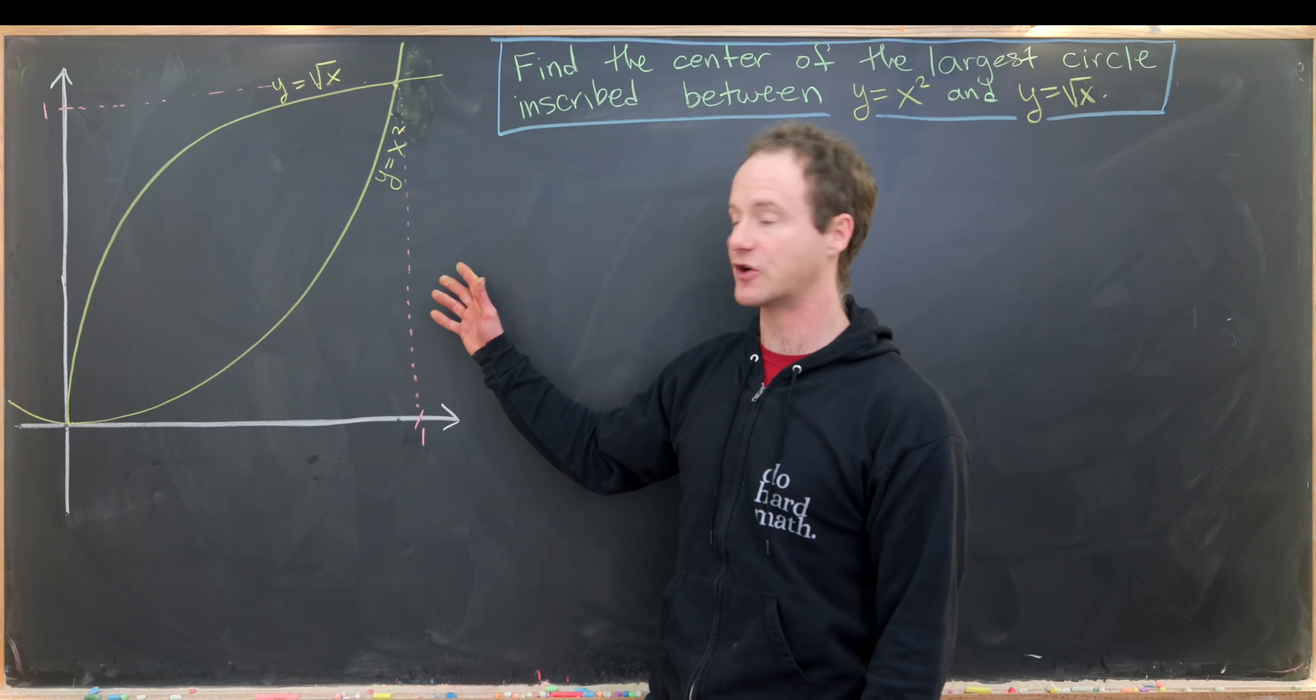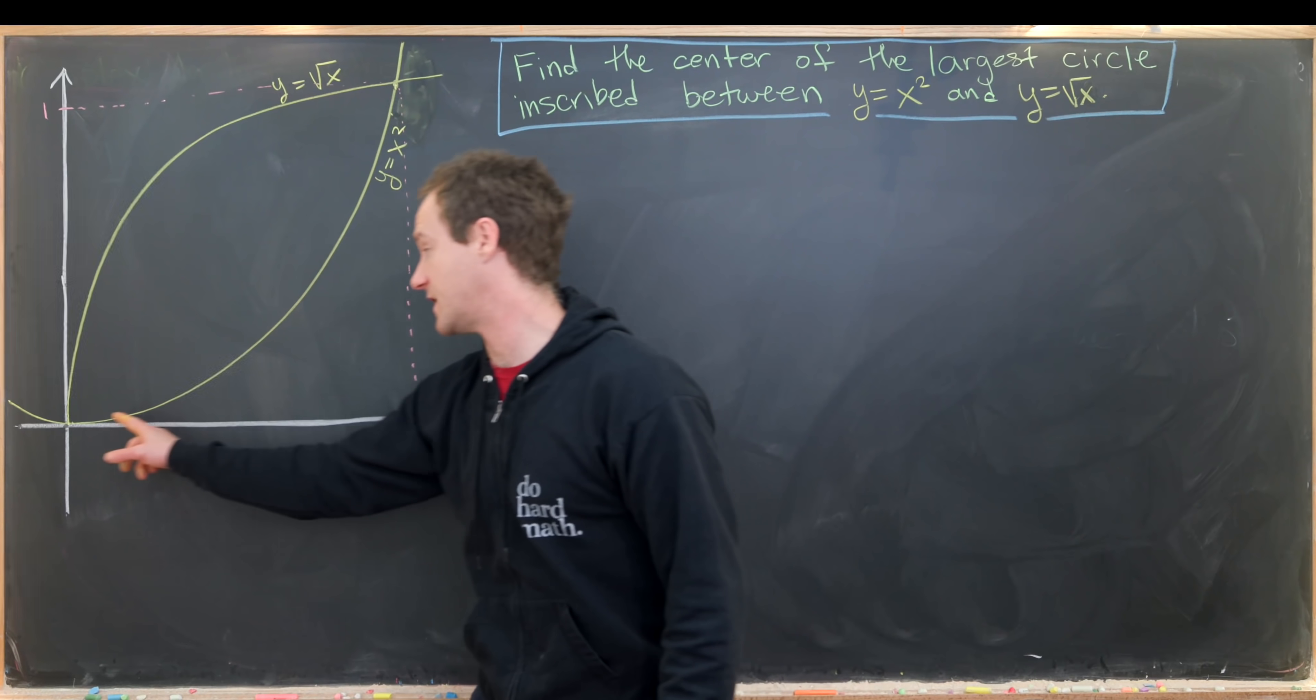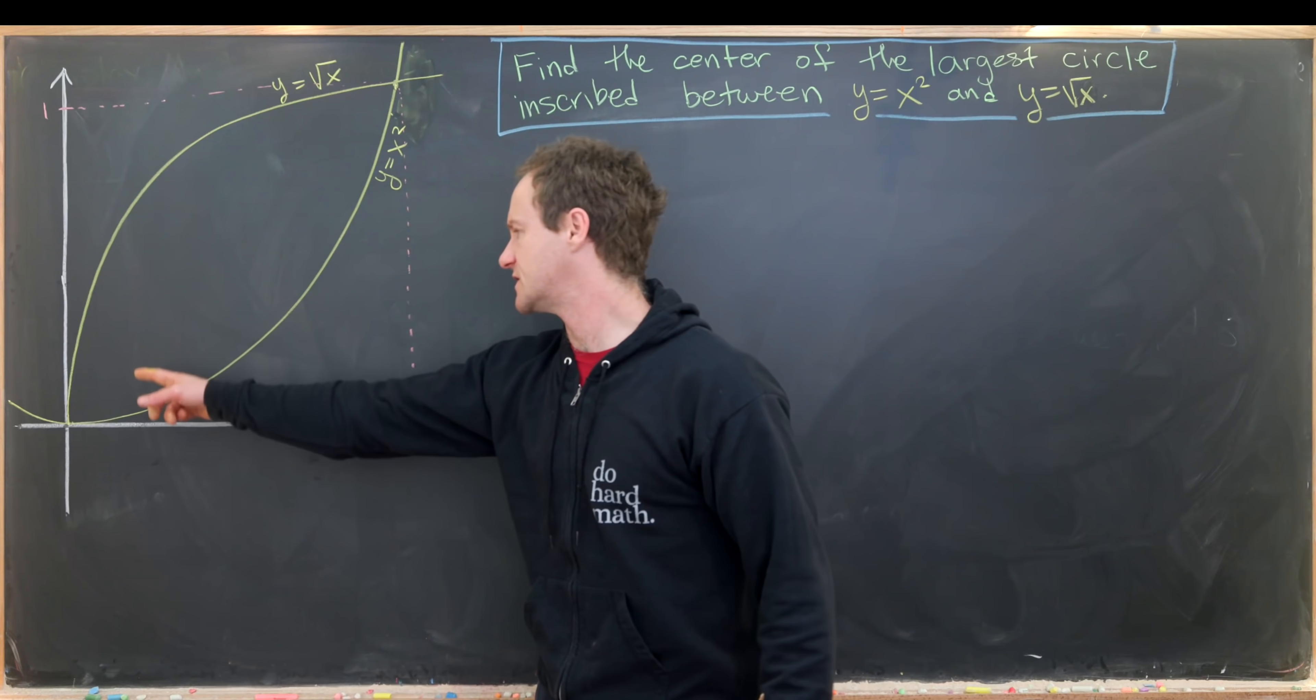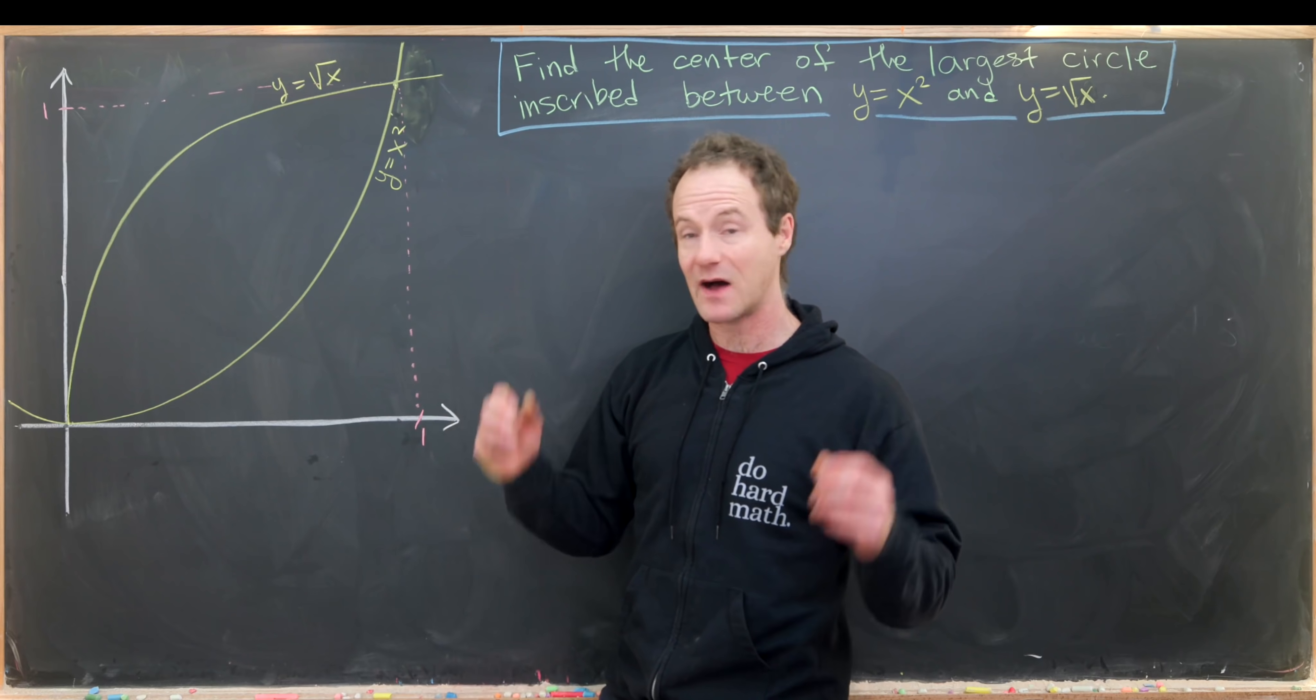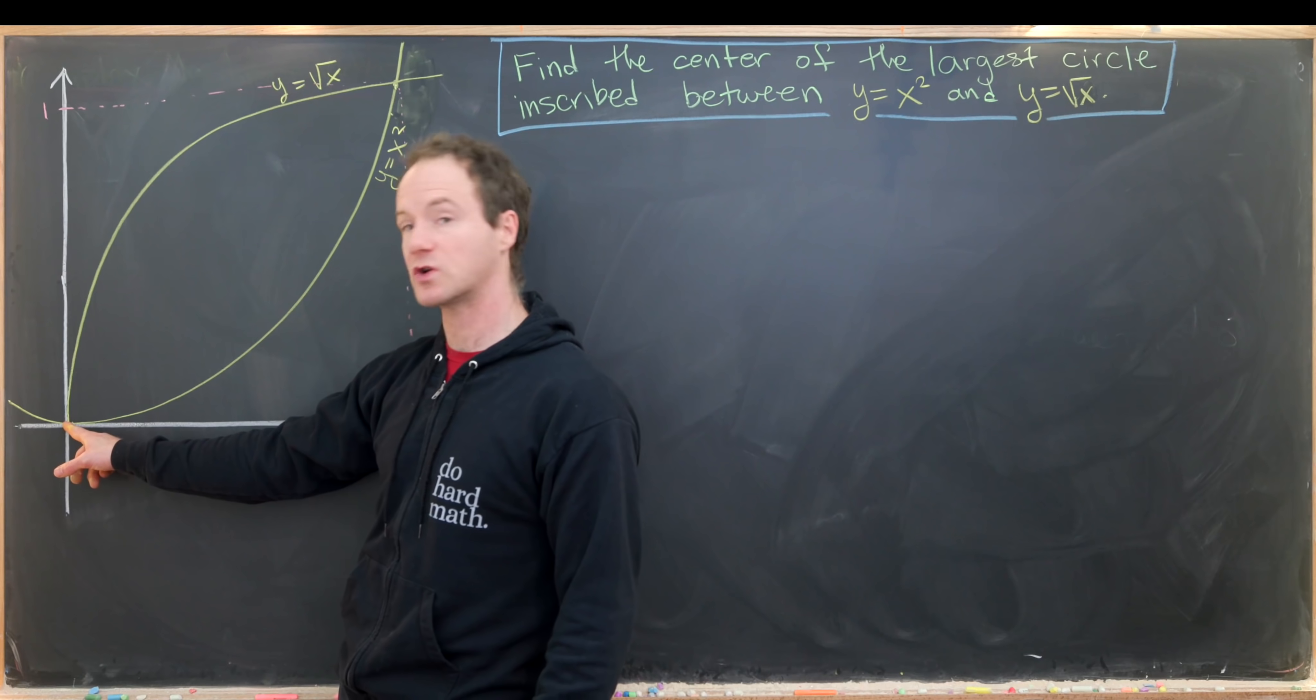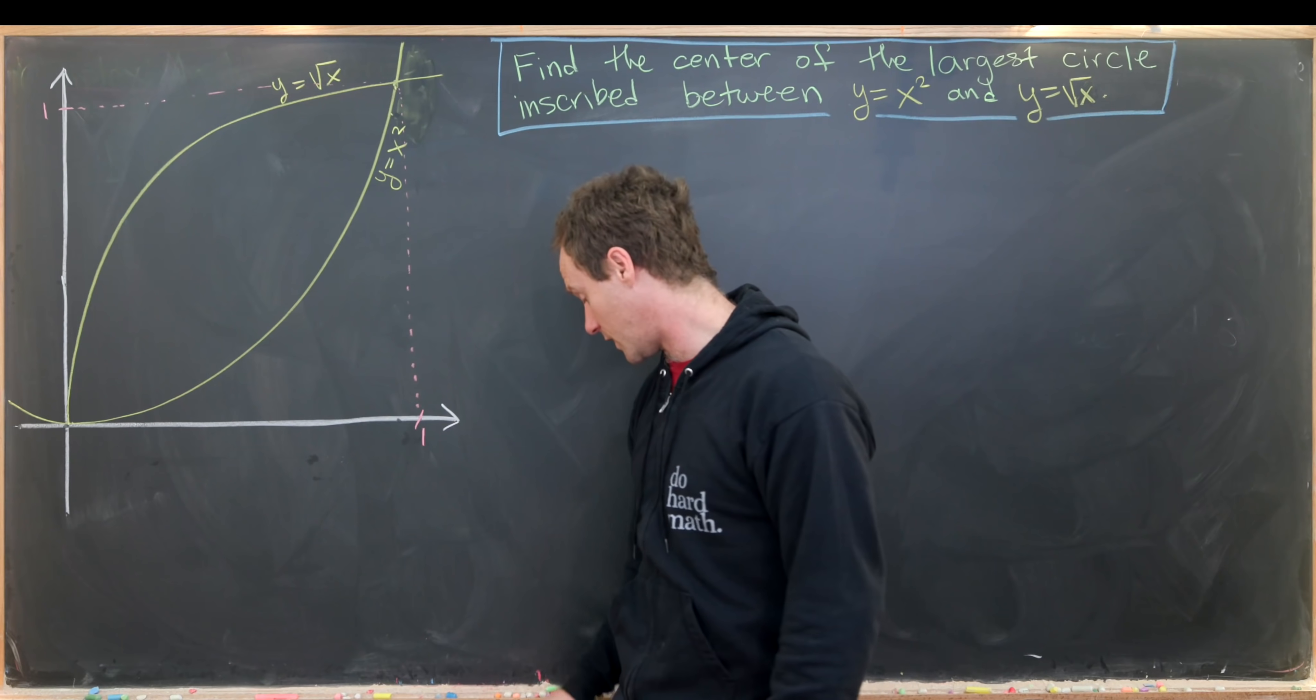I've got a picture started over here. Notice I have the x squared graph here and then the square root of x graph here. This is an upward facing parabola and this is a rightward facing parabola. They intersect at two places: at the origin zero zero and at the point one one.